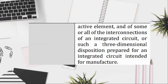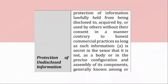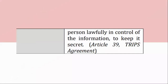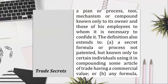Protection of undisclosed information: protection of information lawfully held from being disclosed to, acquired by, or used by others without their consent in a manner contrary to honest commercial practices, so long as such information (a) is secret in the sense that it is not, as a body or in the precise configuration and assembly of its components, generally known among or readily accessible to persons within the circles that normally deal with the kind of information in question; (b) has commercial value because it is secret; and (c) has been subject to reasonable steps under the circumstances by the person lawfully in control of the information to keep it secret. Article 39, TRIPS Agreement. Trade secrets: a plan or process, tool, mechanism, or compound known only to its owner and those of his employees to whom it is necessary to confide it.